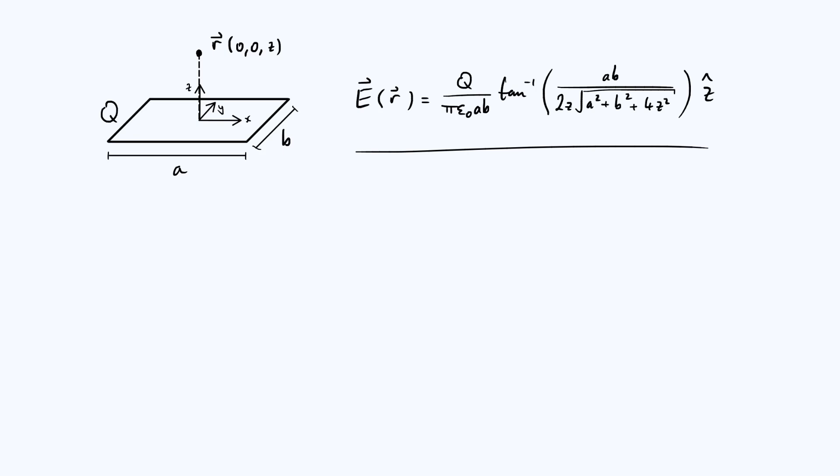By symmetry, the electric field only points in the z direction, so we get this complicated looking arctan dependence. If you'd like to see where that comes from, go have a look at that other video, but what we're going to do today is consider three specific limiting cases of this expression for the electric field that we got, for two reasons.